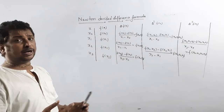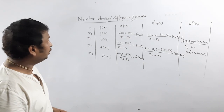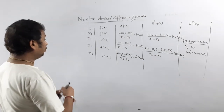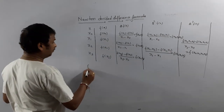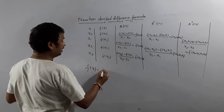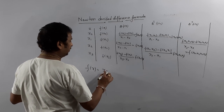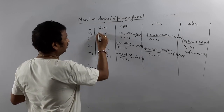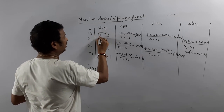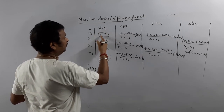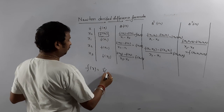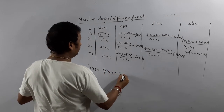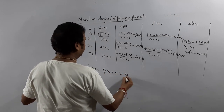Now I am going to write Newton's divided difference formula. Newton's divided difference formula for f(x) is very simple — similar in structure to Newton's forward difference formula. It starts with f(x0) plus (x minus x0) times the first divided difference...